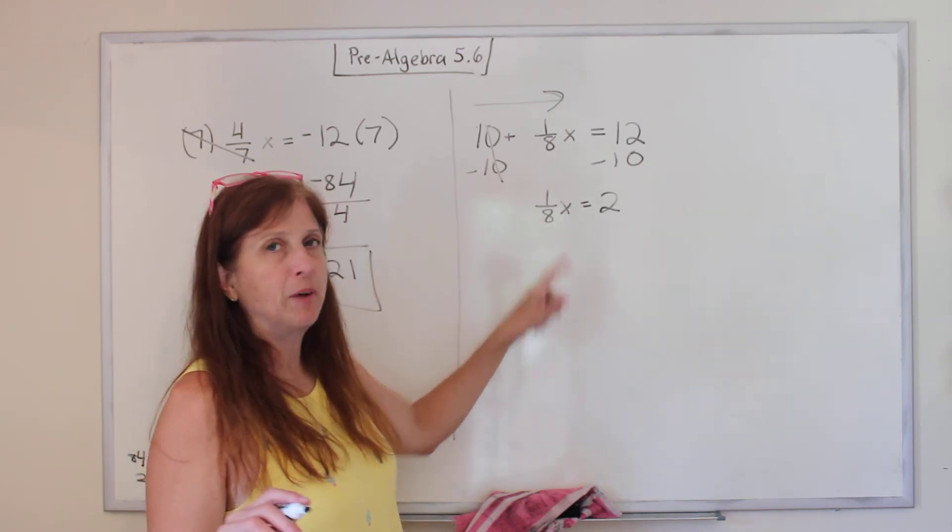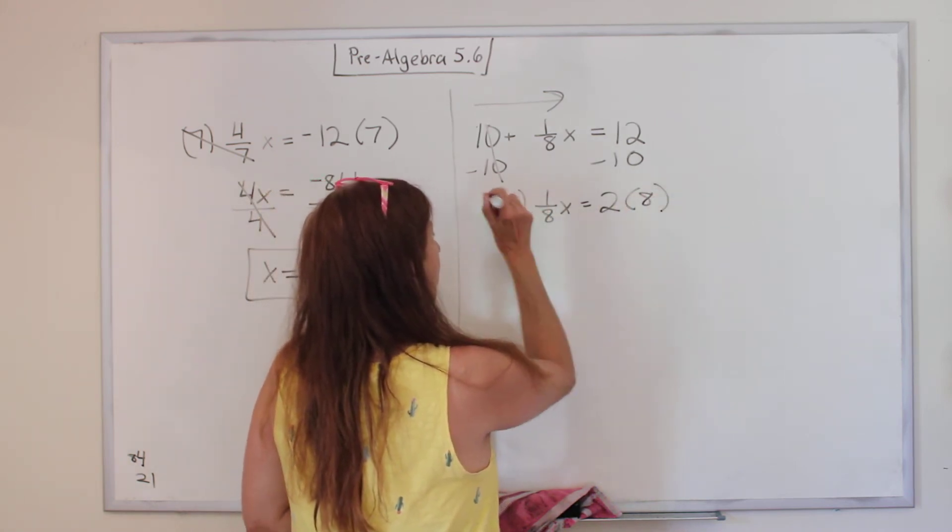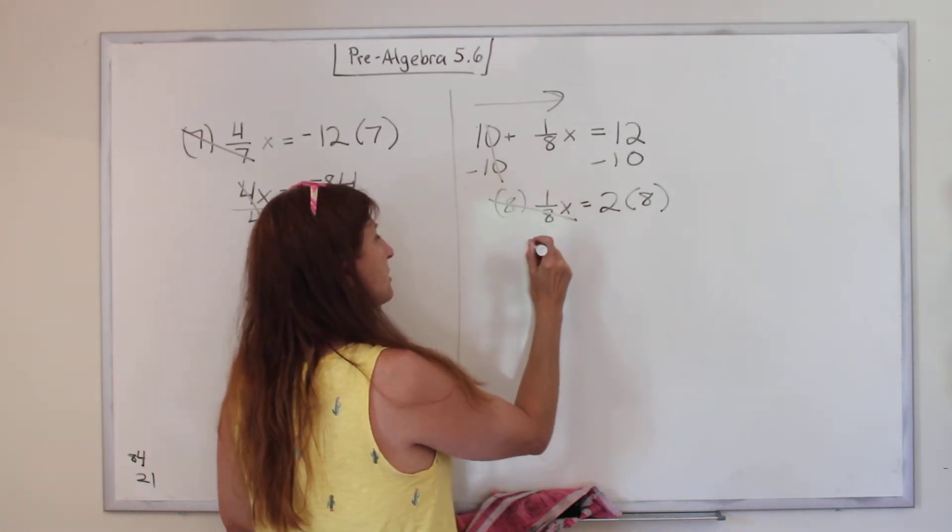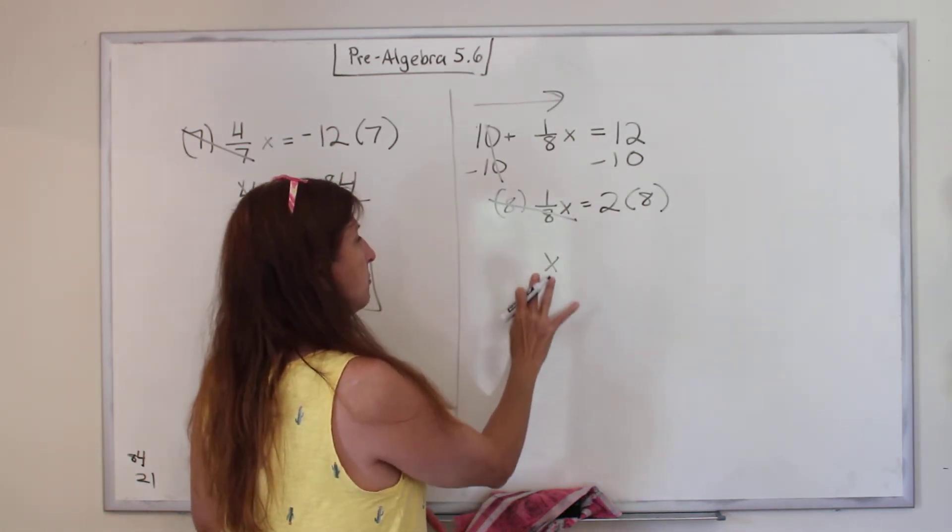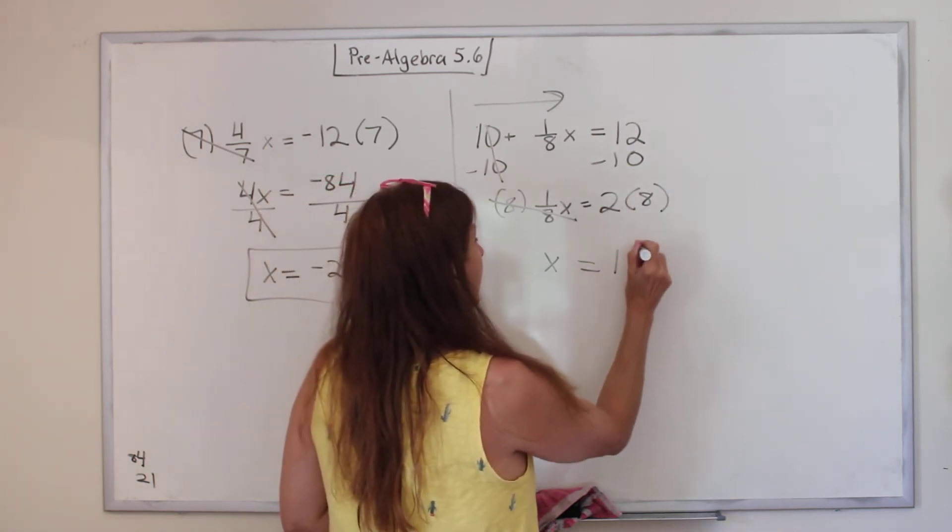What's the opposite of divide by 8? Multiply by 8. What I do to one side, I do to the other. Those cancel out. I bring down what I didn't mess with. And it's like 1 times x, but it can become an understood one. I don't have to write it. And 2 times 8 is 16.